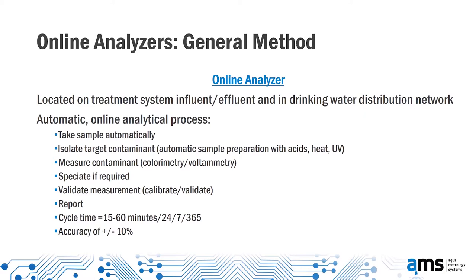We need to get all of the selenium in that sample, not half of it — it's no good accurately measuring half the selenium. So that involves a lot of sample preparation with acids, heat, and ultraviolet light to extract the contaminant of concern. We then move on to measurement itself, where we employ two principal technologies: colorimetry and voltammetry, with the method chosen according to the contaminant of concern.